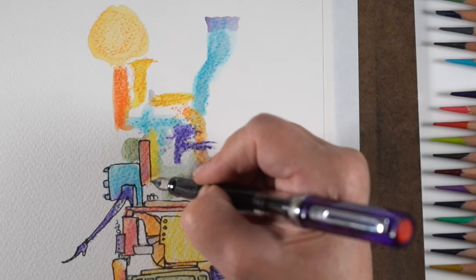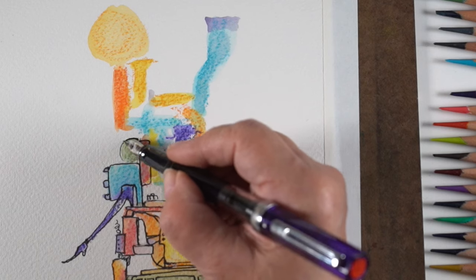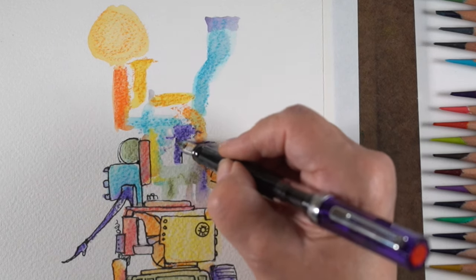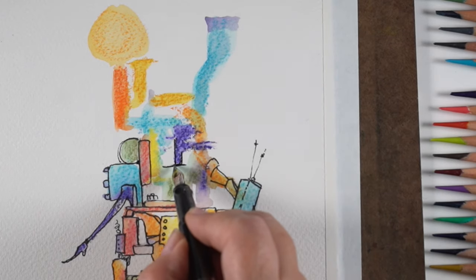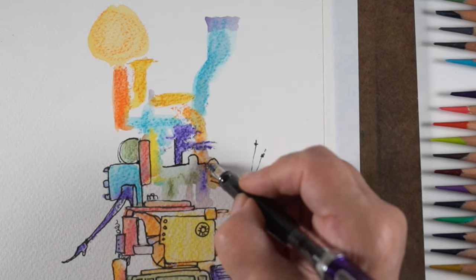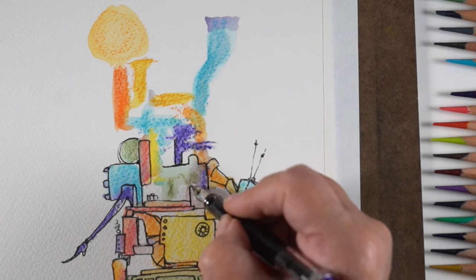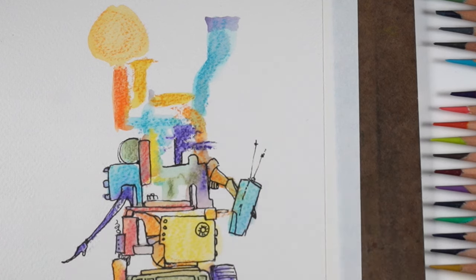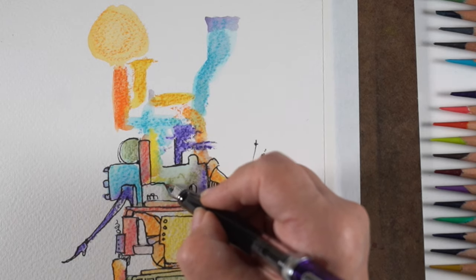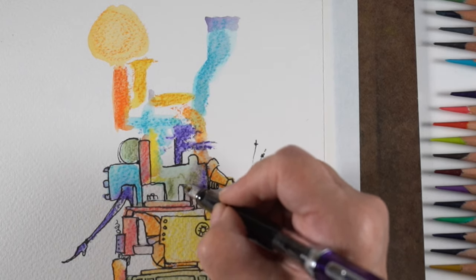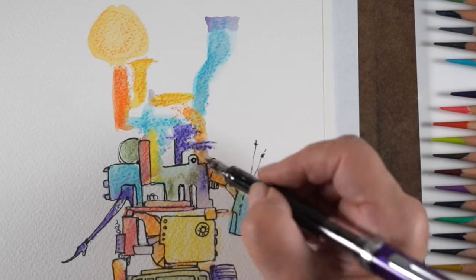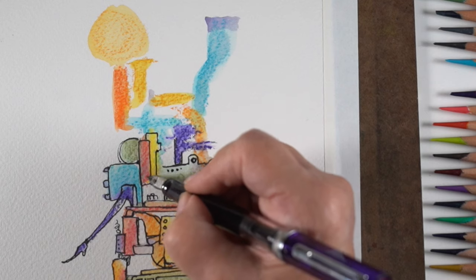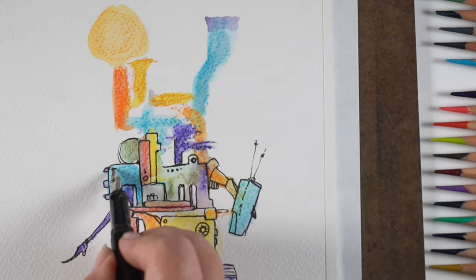But with these Inktense pencils, one of the things that is cool about them is that once they are on the paper, you can't lift them very well. And what that means is with regular watercolor pencils, if you have some watercolor pencil that's yellow next to some watercolor pencil that's blue, then if you water out the yellow part and then let it dry and then you water out the blue part, you still might get some areas where the yellow re-wets and pulls into the blue and makes a little green.